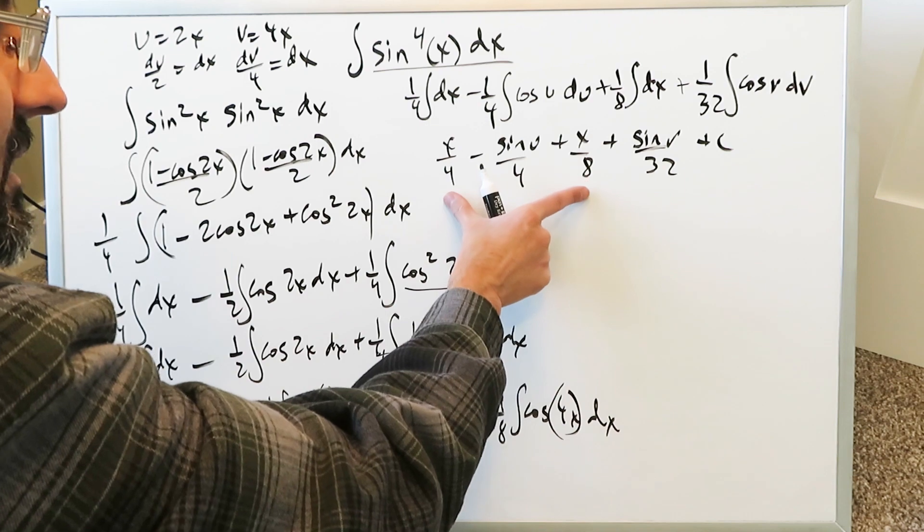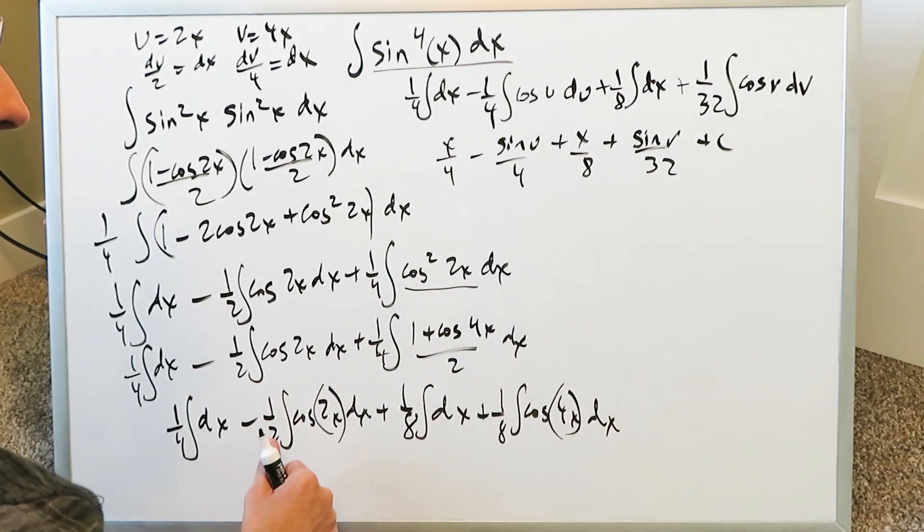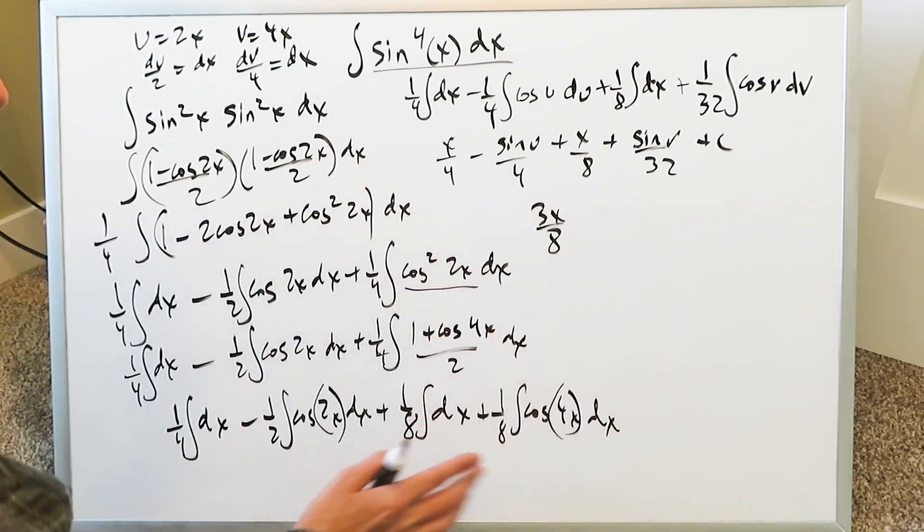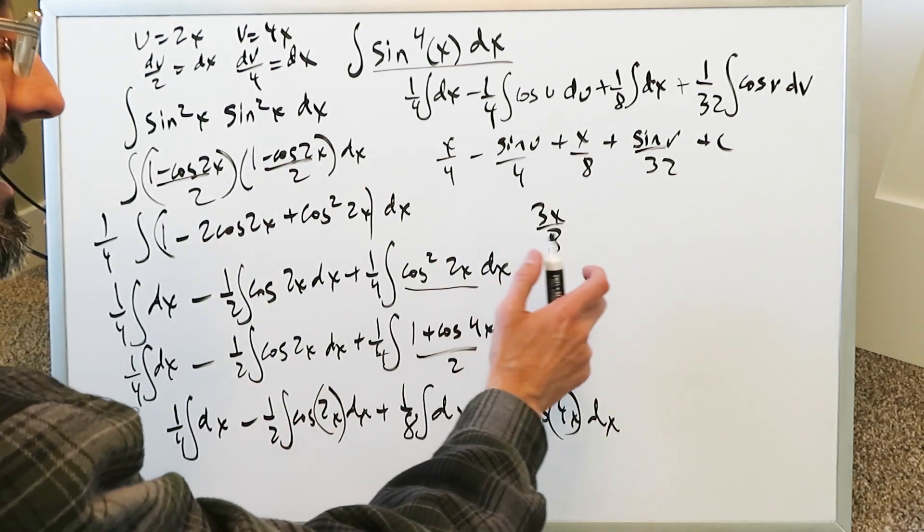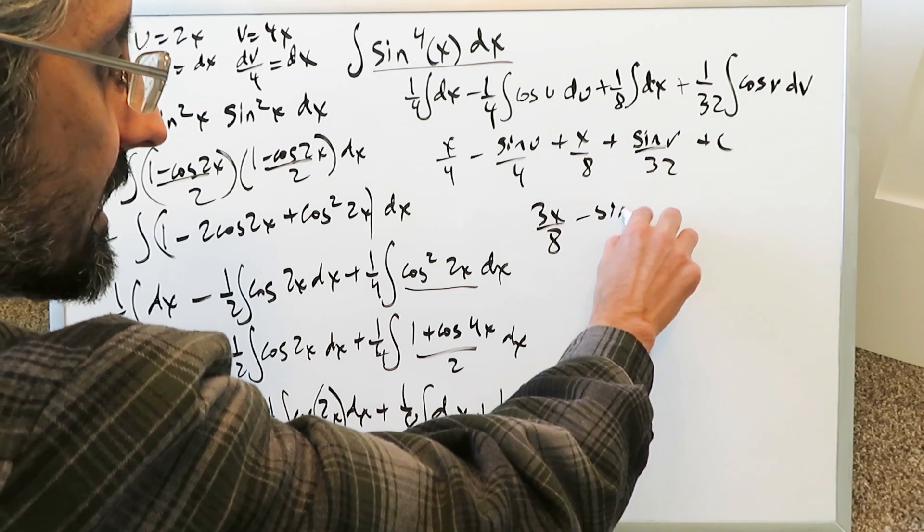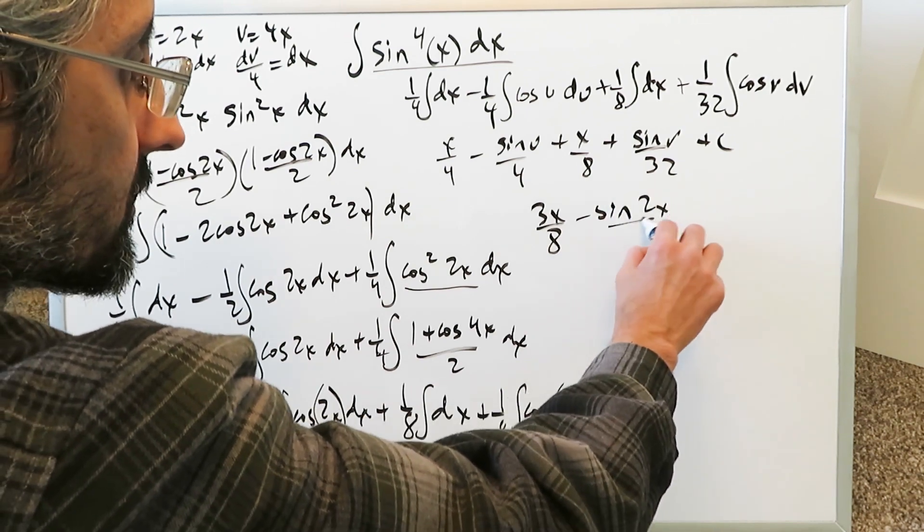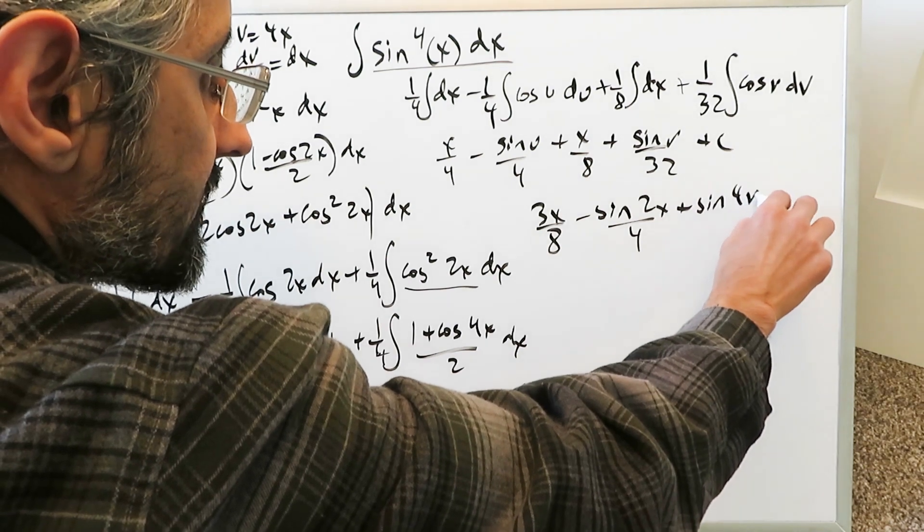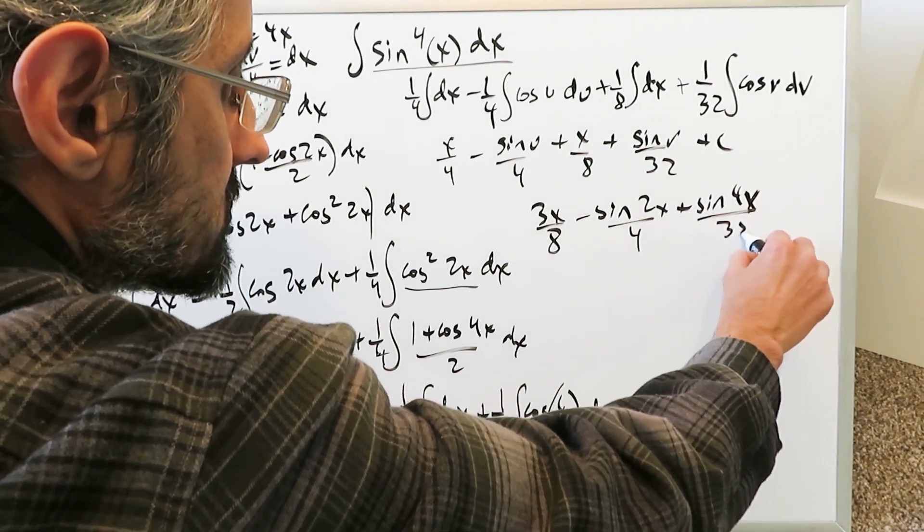Now let's substitute and let's combine x over 4 and x over 8 which will be 3x over 8. In all instances here the x could have been a theta. It would not have made any difference.